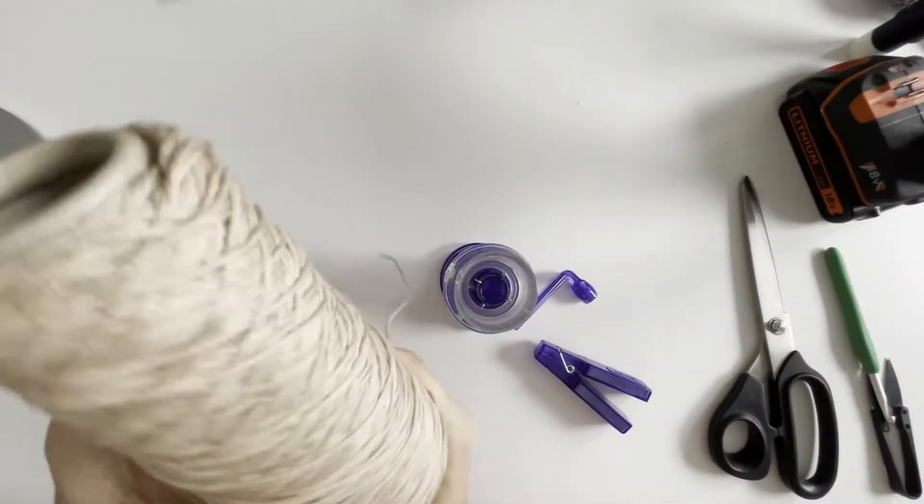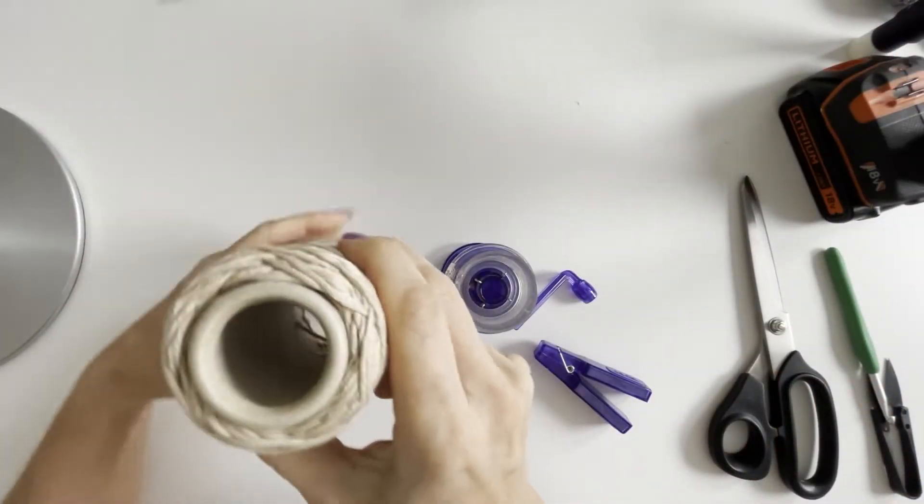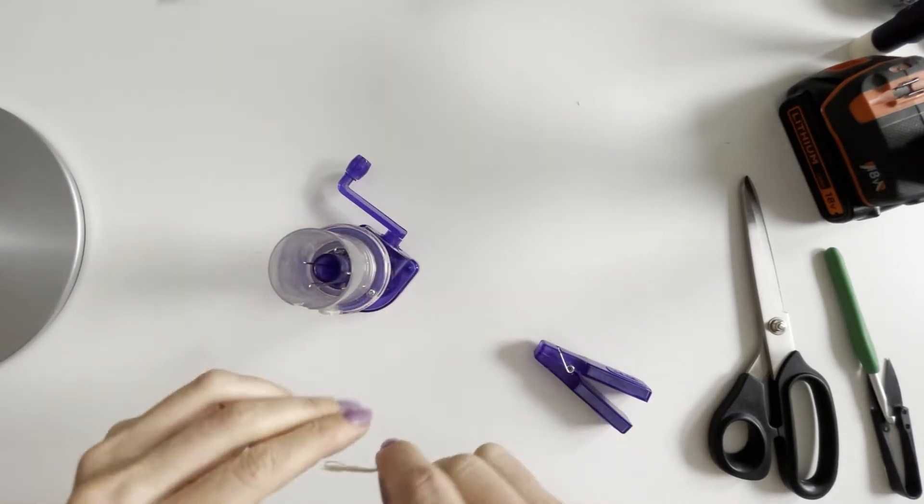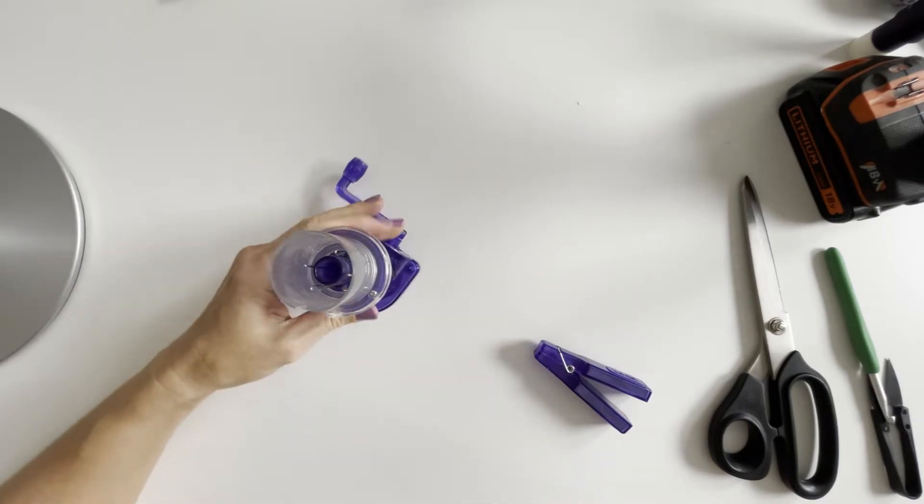For this project I'm going to use yarn on a cone because it's easier to work with and it's really fast. First I'm going to thread the yarn through the lower guide.